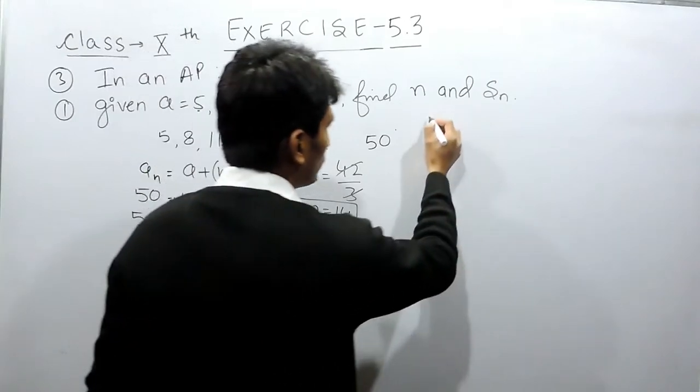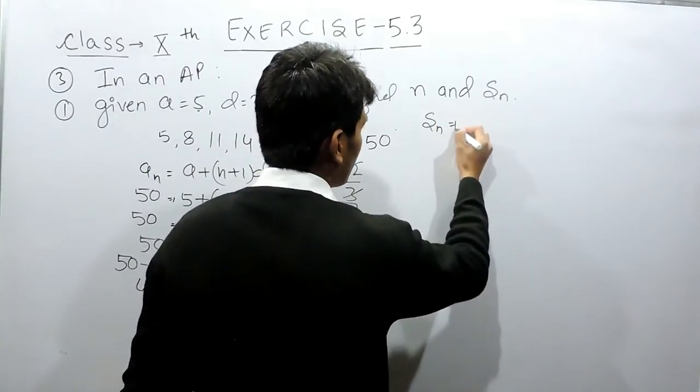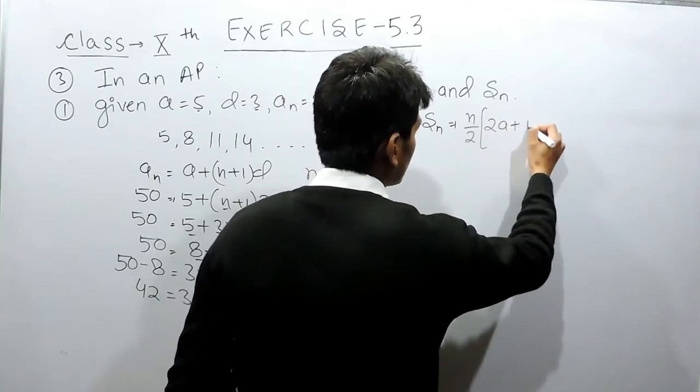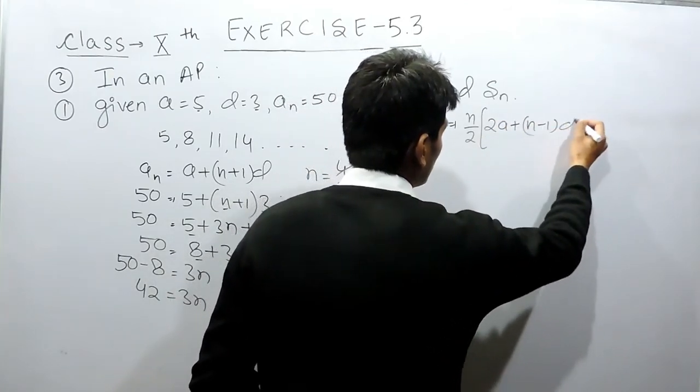Now to find out the sum of an AP we have a formula which says the sum is equal to N by 2, 2A plus (N-1) into D.